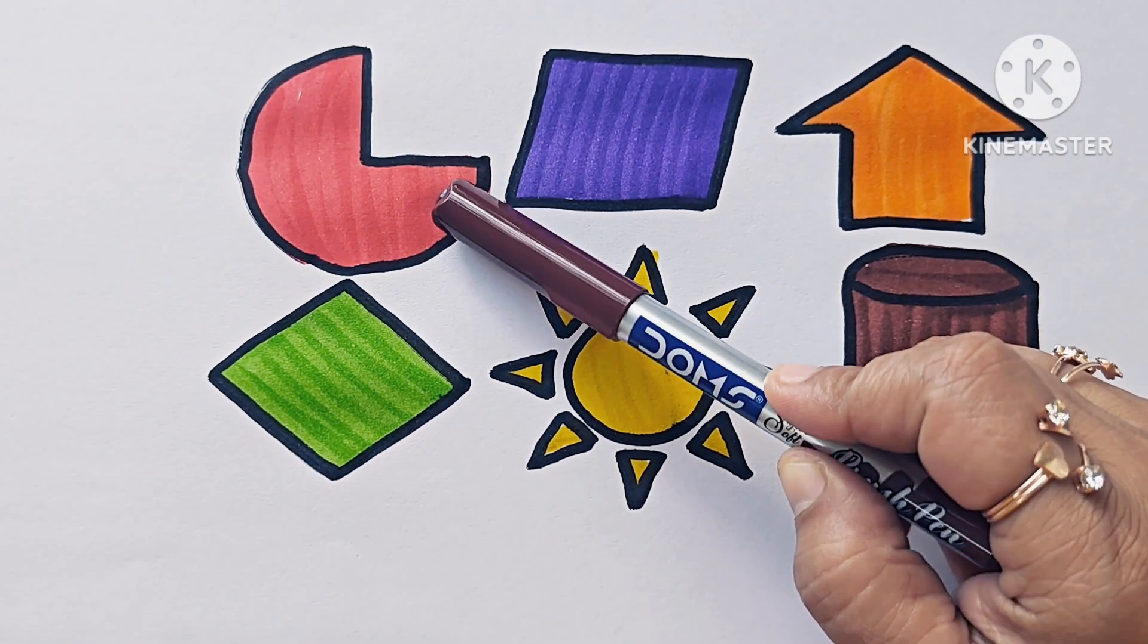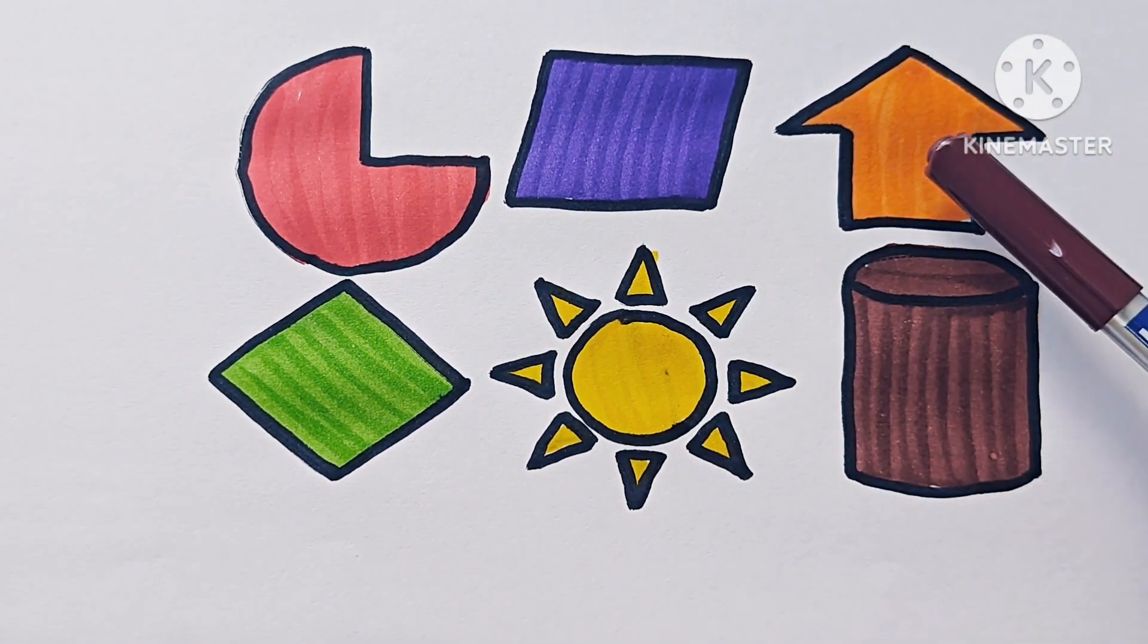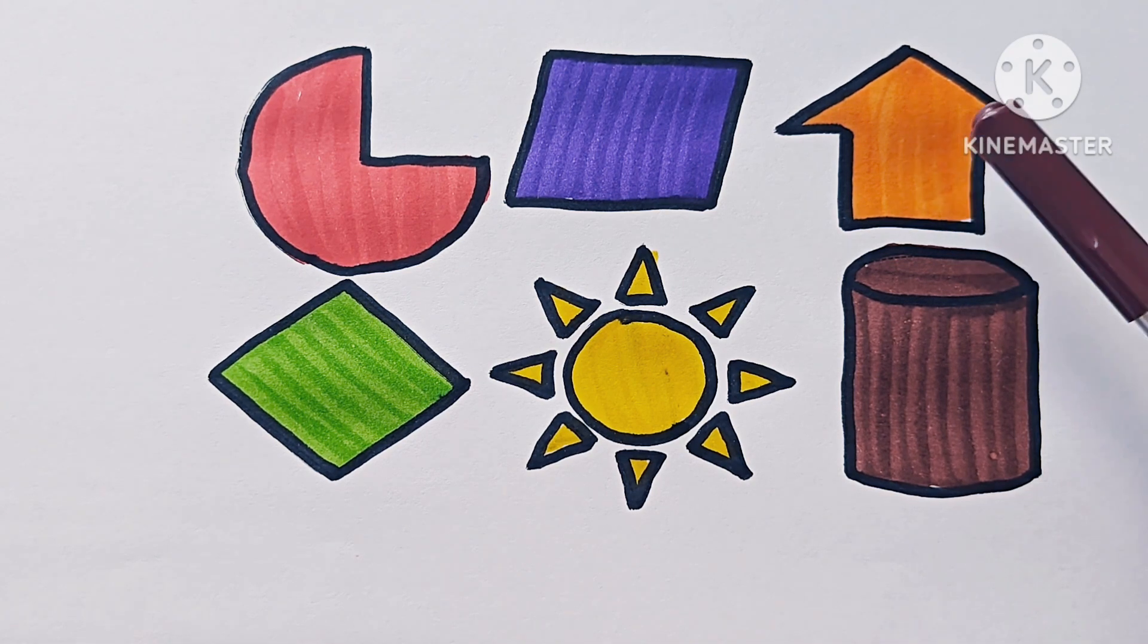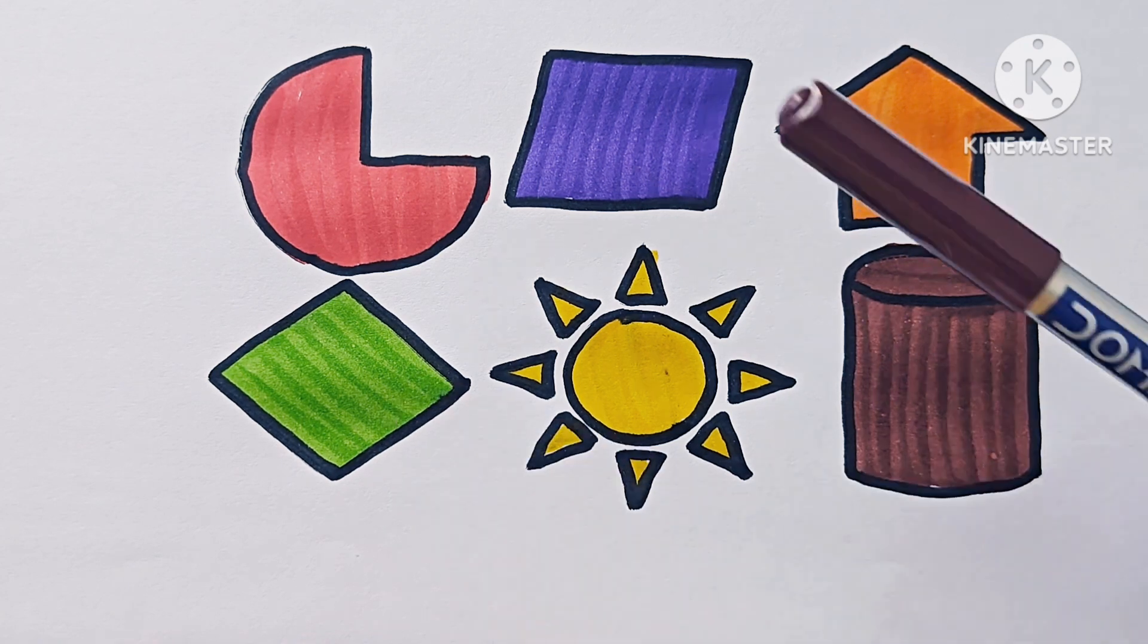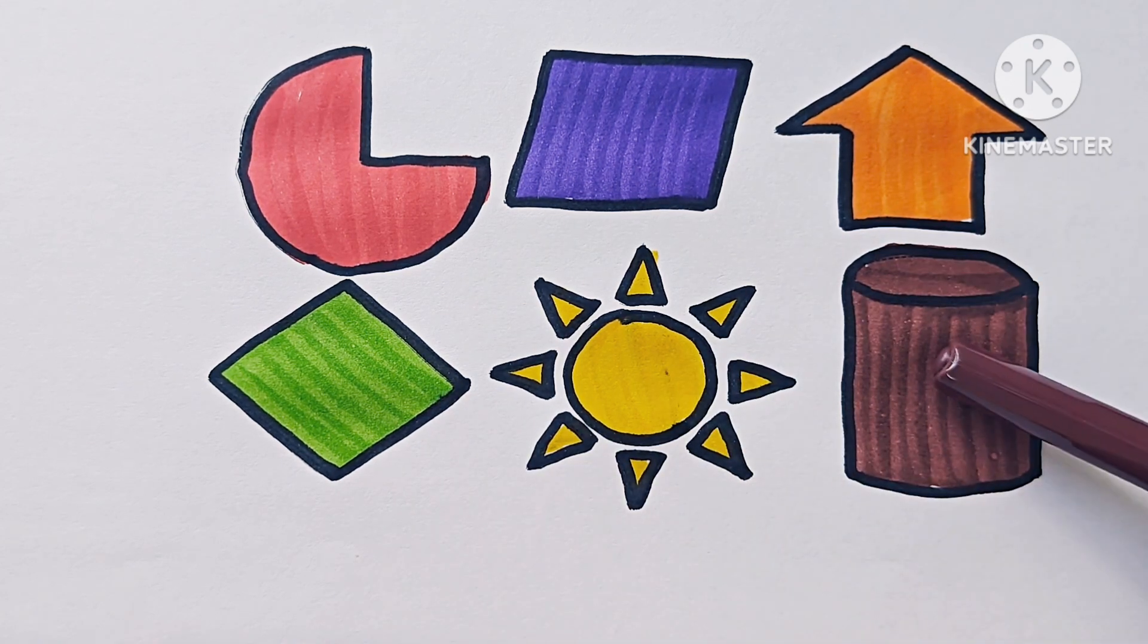This is pie. Parallelogram. Upward direction arrow, up arrow. This is rhombus or diamond. This is sun. This is cylinder.